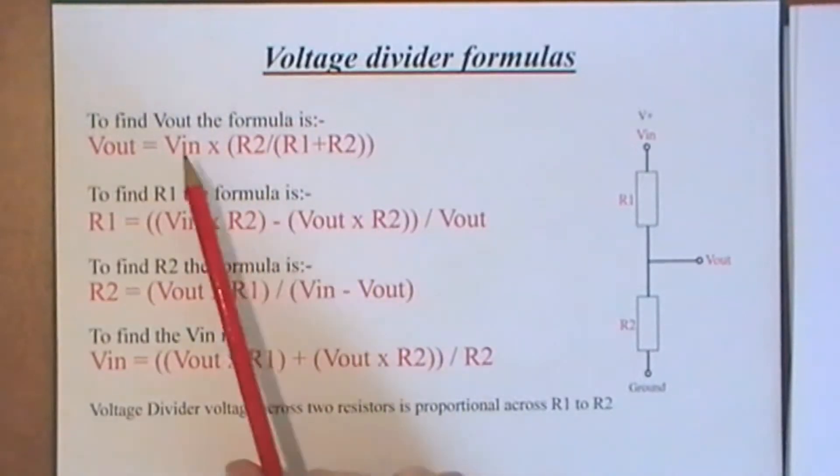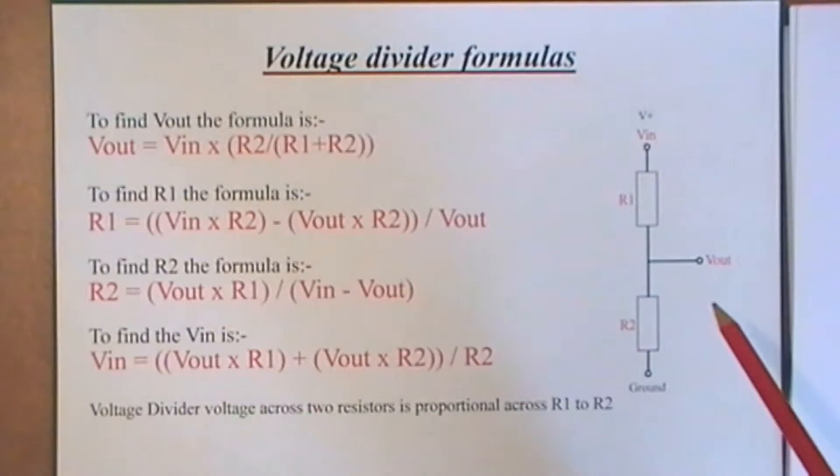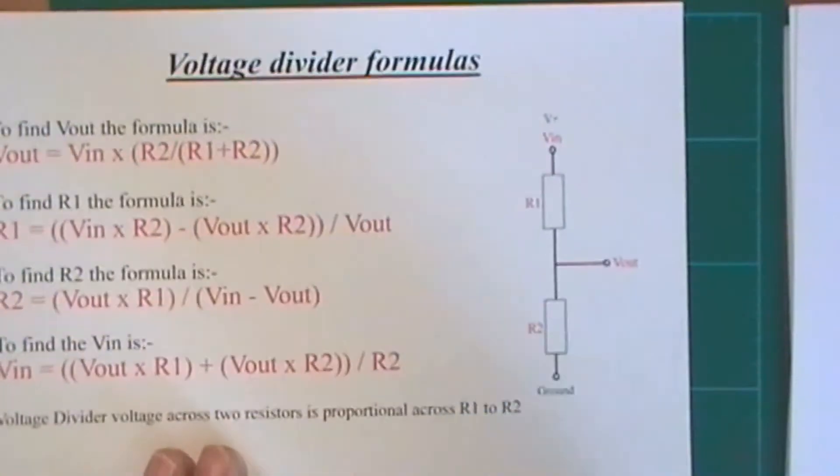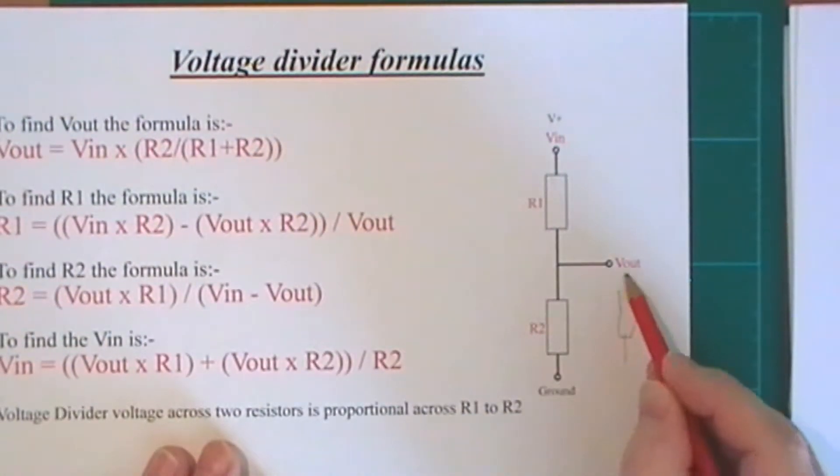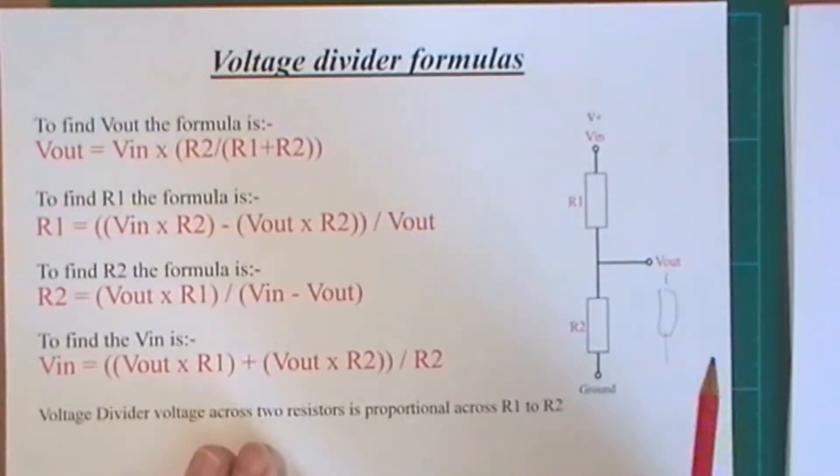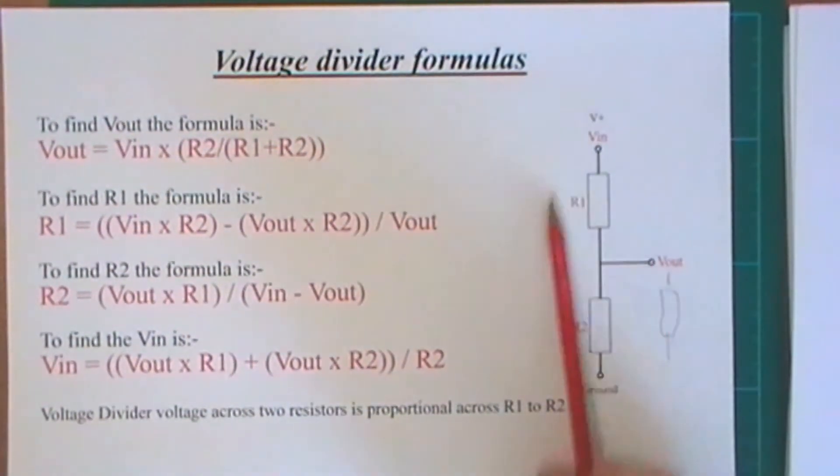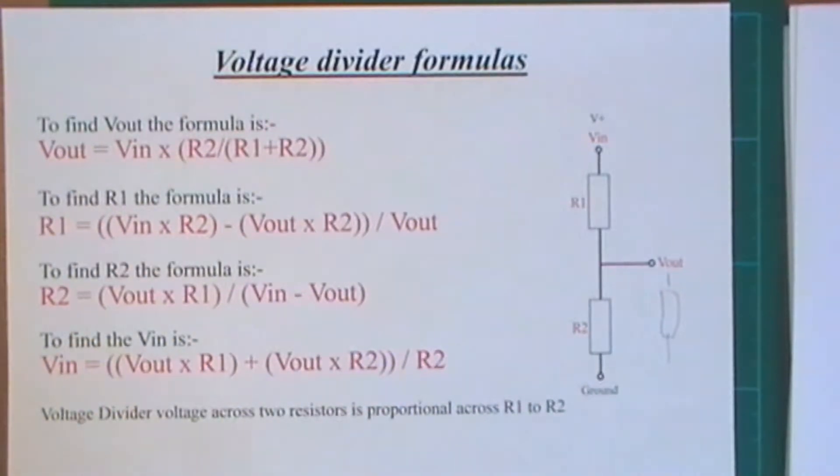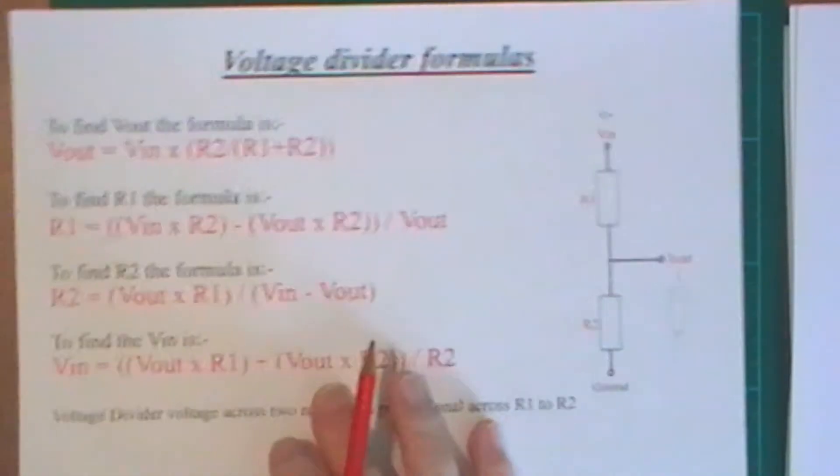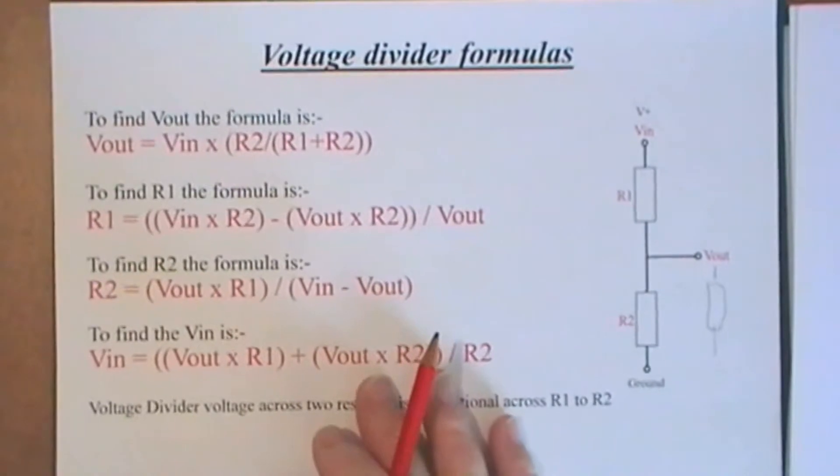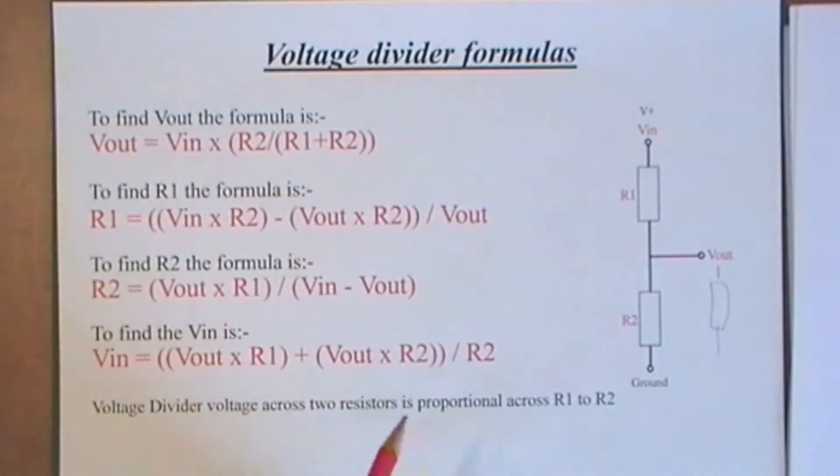Now with the circuit we've got, it's not very good if you want to put a load across here. If you've got a load, like another resistive load there, then what happens is it will change the characteristics of this whole circuit. So you cannot use it as a voltage supply because it will just change everything. What you can do with this circuit is use it as an input for a next stage of a circuit.